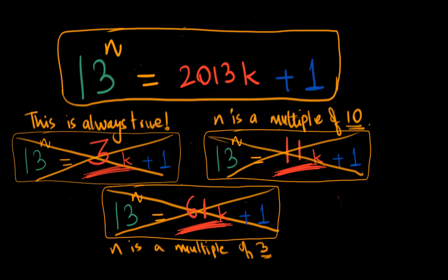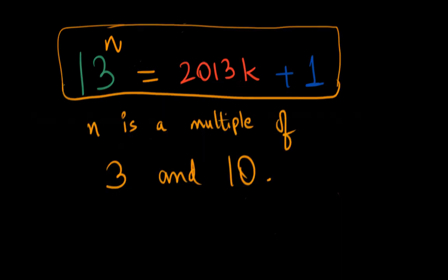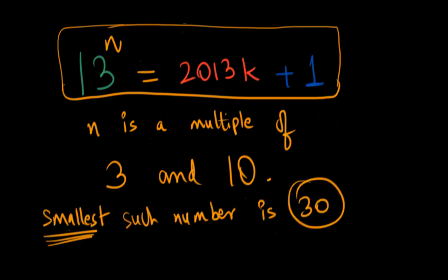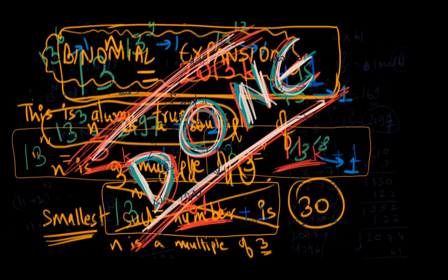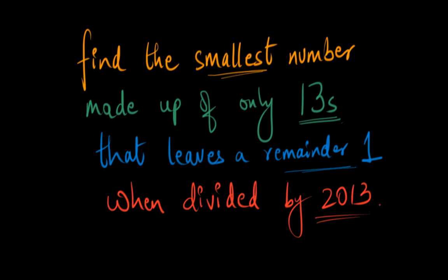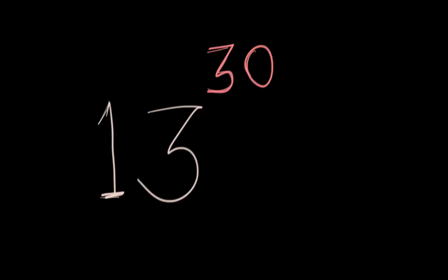Alright, time to fit all the pieces together. The power of 13 that we're looking for should leave remainder 1 when divided by 2013. And we can guarantee that this will happen if it leaves the remainder 1 when divided by the factors of 2013. Now 3 doesn't have a lot of problems. But 11 wants n to be a multiple of 10, and 61 wants n to be a multiple of 3. And don't forget that we want n to be as small as possible. Let's give ourselves a huge round of applause because we're finally there. The lowest common multiple of 3 and 10 is 30. And that's, that's our value of n. We finally did it, yay! The smallest number that's made up of only 13s that leaves the remainder 1 when divided by 2013 is 13 to the power 30. And that's my favorite mega number.